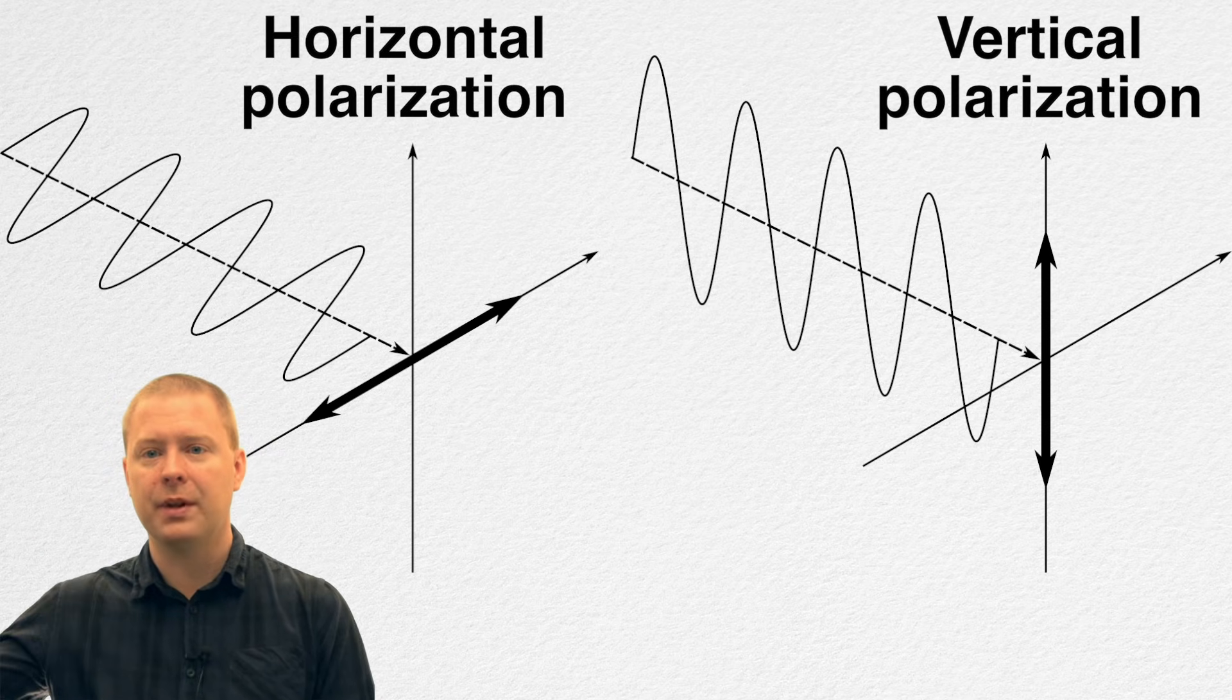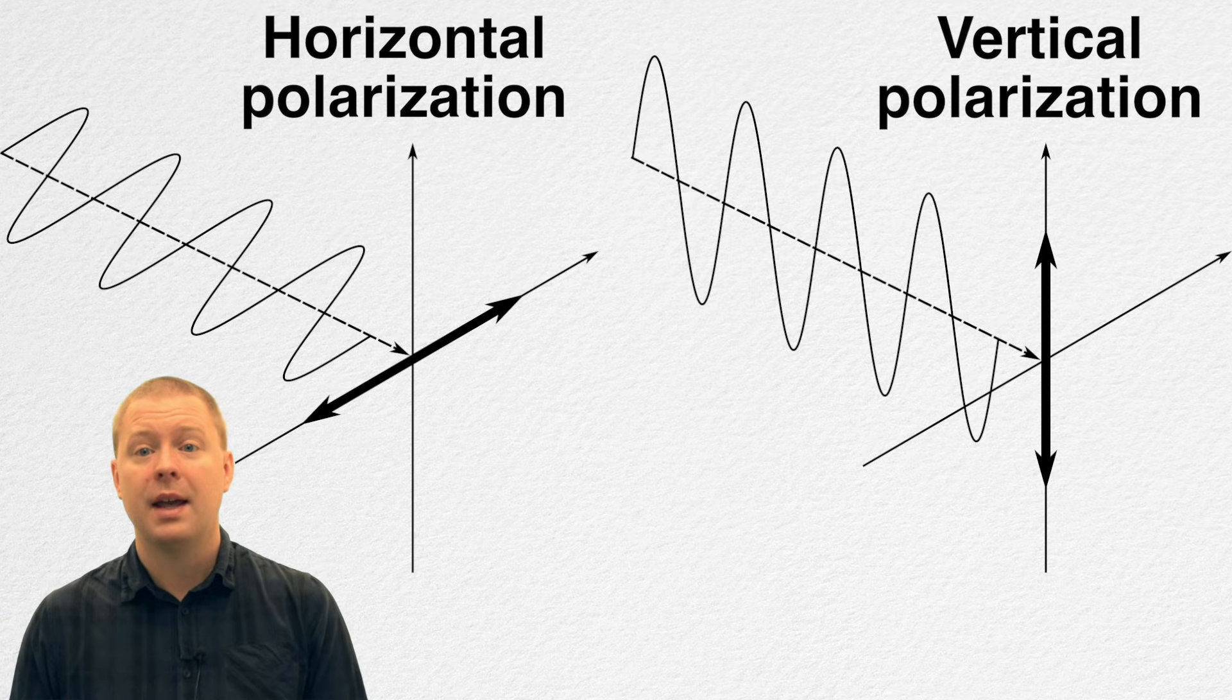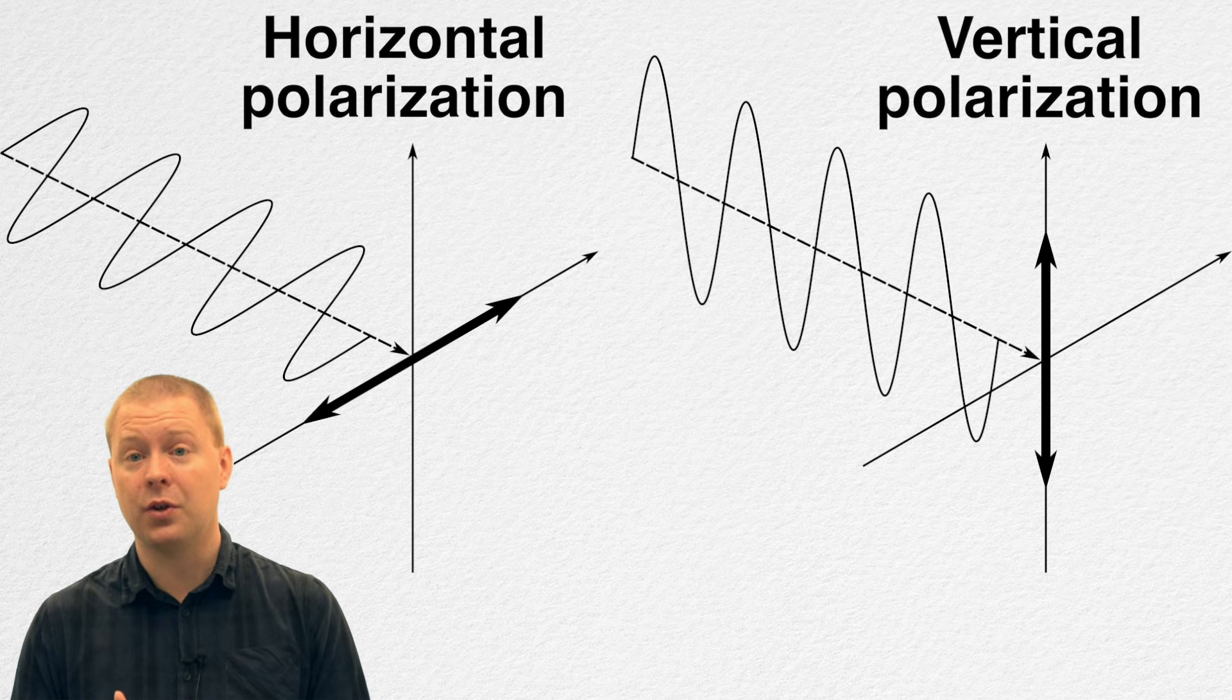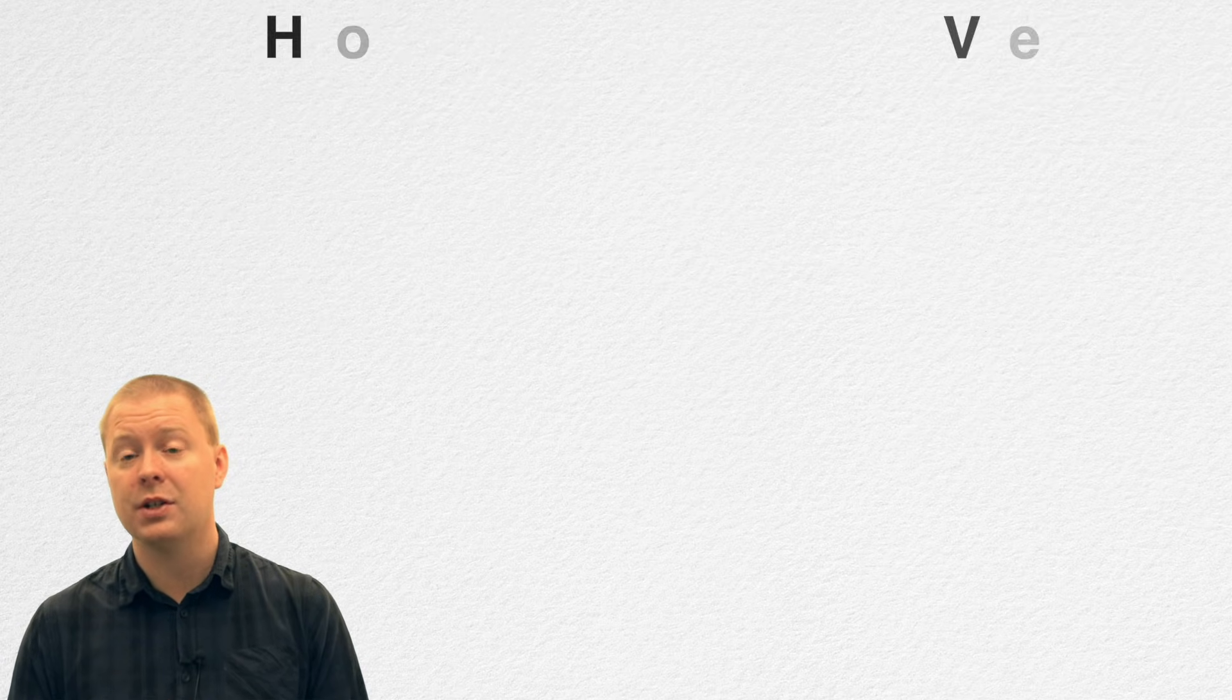Electromagnetic waves can have different polarizations like that or like this, and each antenna is only sensitive to one type of polarization. There's a risk that you can get signals of a polarization that you cannot detect on the antenna unless you have two orthogonal types of polarizations.